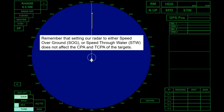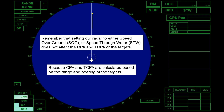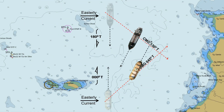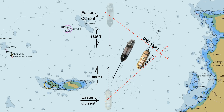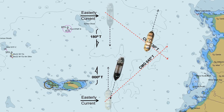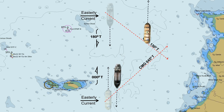Remember that setting our radar to either speed over ground or speed through water does not affect the CPA and TCPA, because it is calculated based on the range and bearing of the targets. According to the International Regulations for Preventing Collisions at Sea (COLREGS), Rule 14, head-on situation, paragraph A: each shall alter her course to starboard so that each shall pass on the port side of the other.